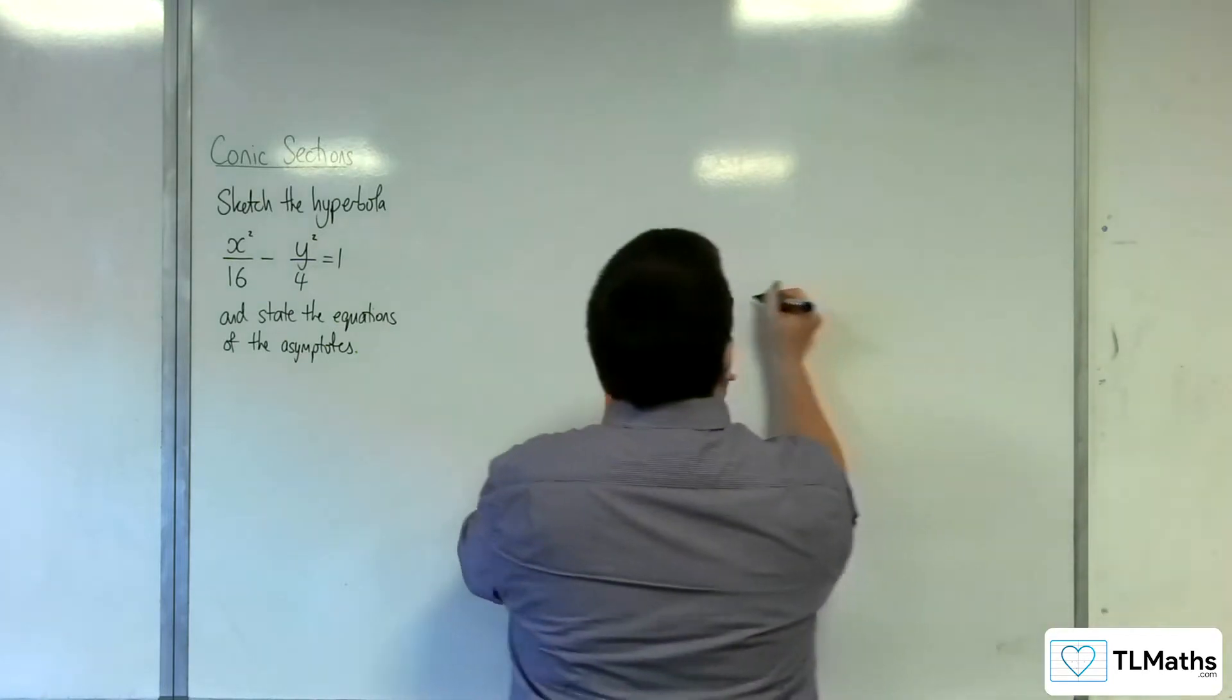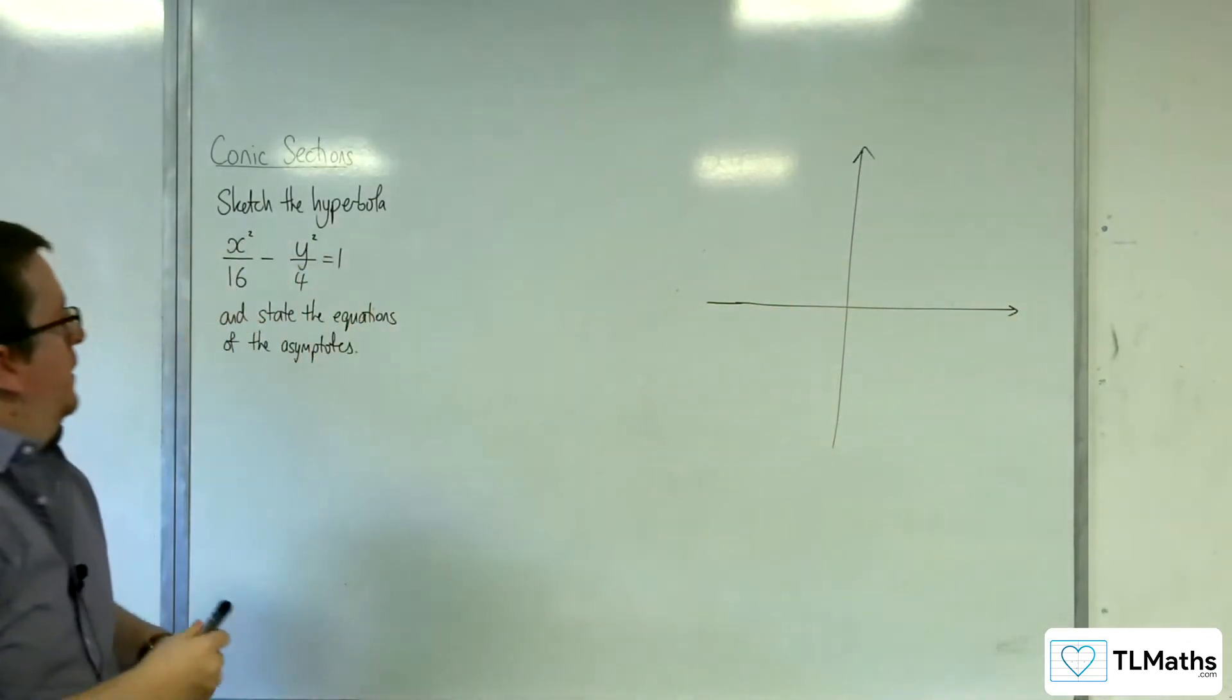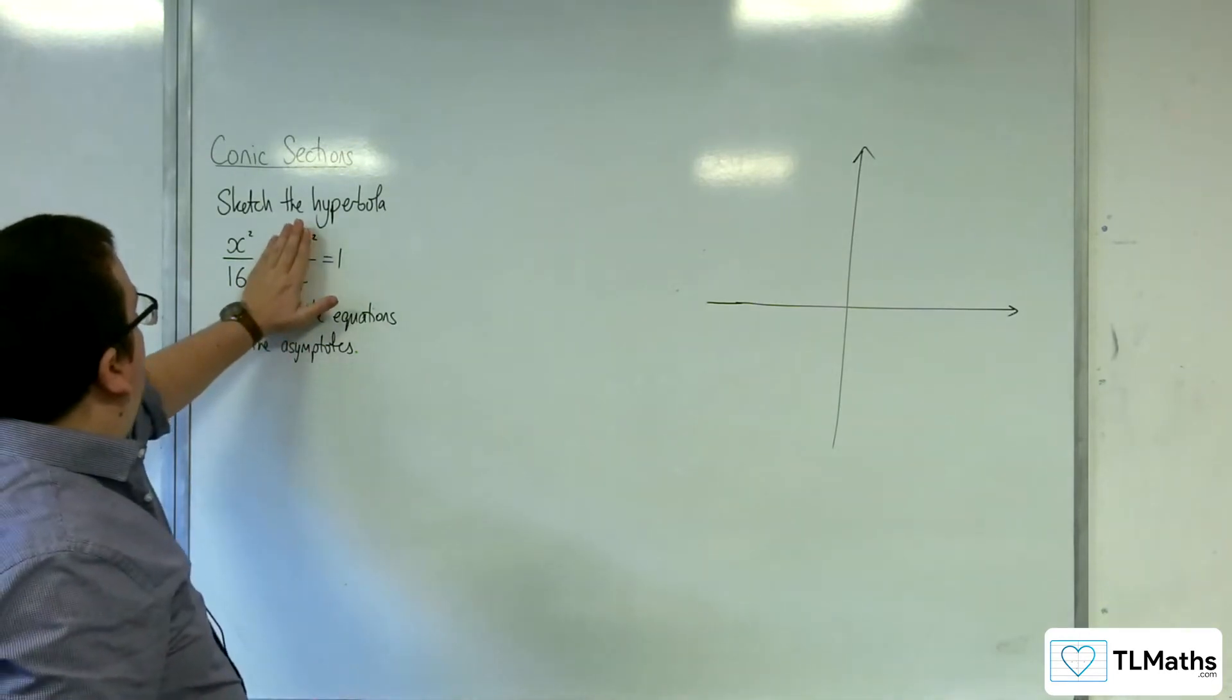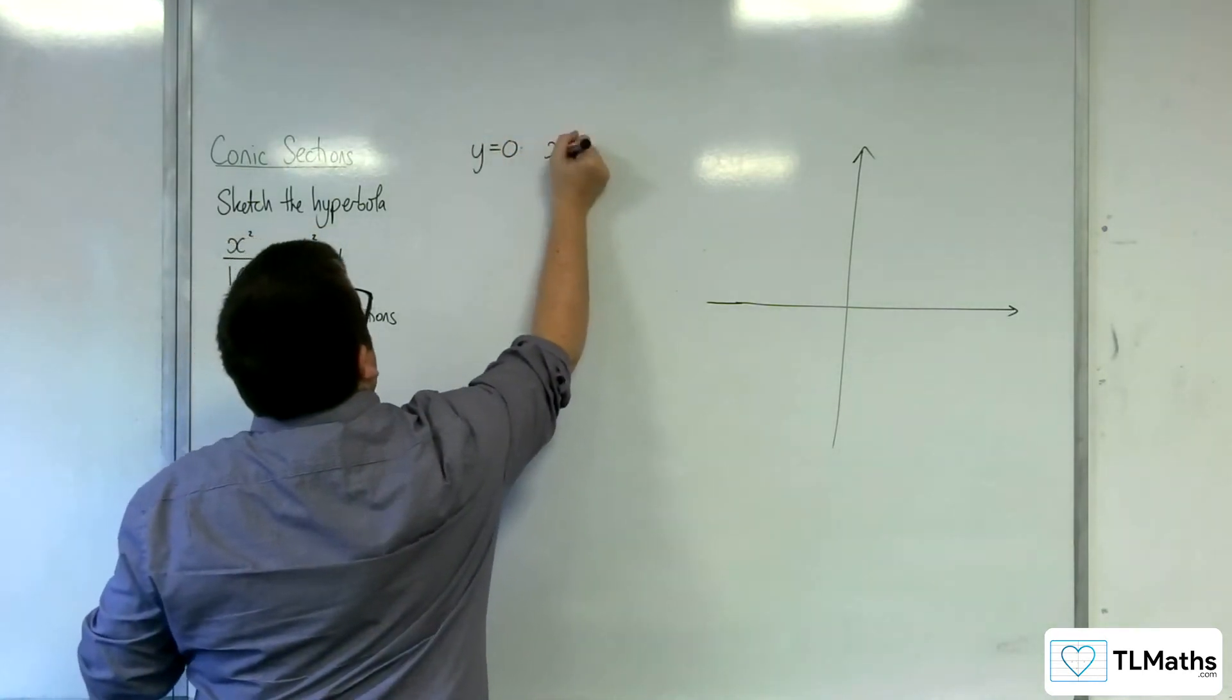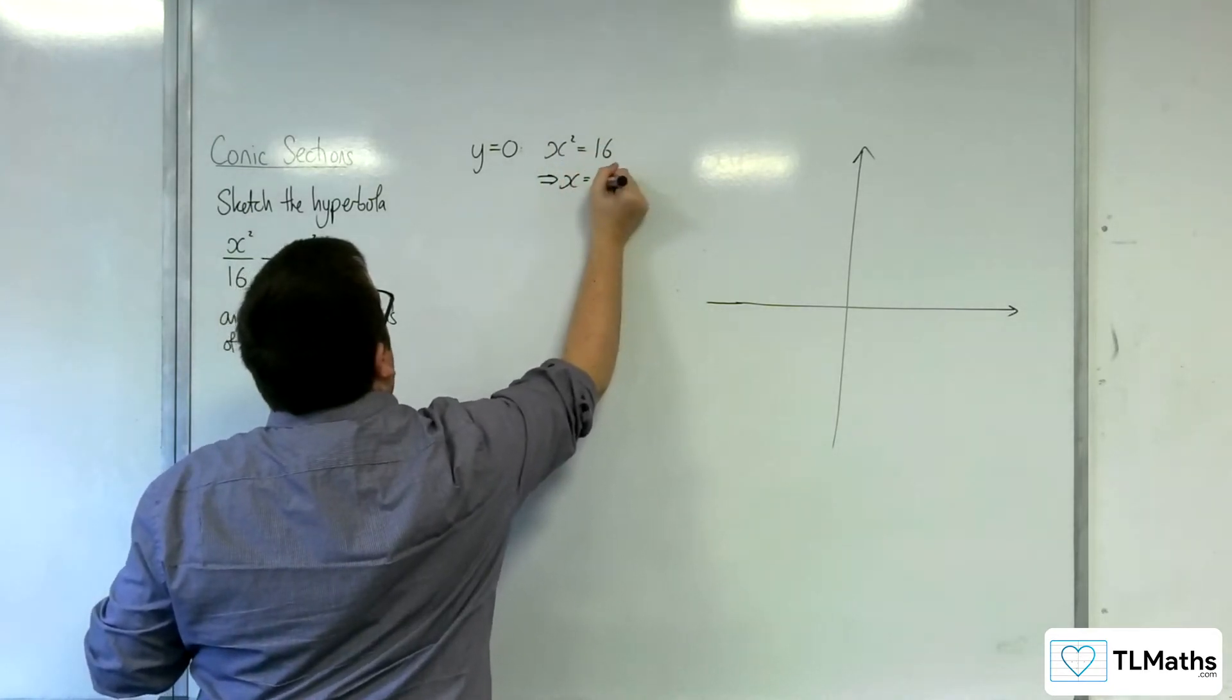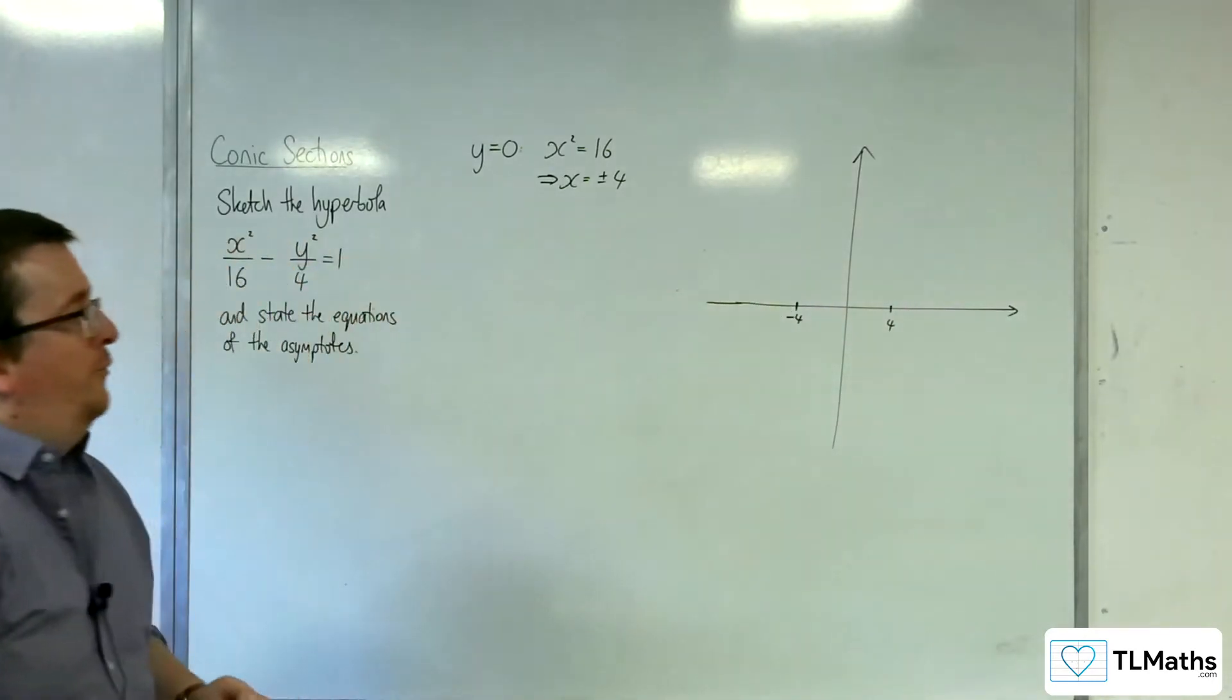So let's get some axes drawn. First of all, when y is 0, we're going to get x squared over 16 is equal to 1. So x squared would have to be equal to 16, so x is equal to plus or minus 4. So we know that we are crossing through the x-axis at plus or minus 4.